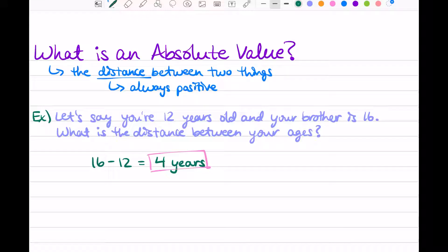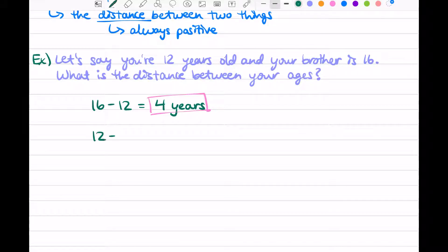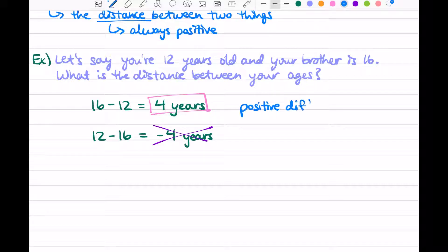However, the order matters here. We did 16 minus 12. What if we took 12 minus 16? Then we get negative four. And that doesn't really make sense, does it? Negative four years? Years is a measurement, so it must be positive. You could say you're four years younger, but you can't say negative four years. So that is not what we want. And since you can subtract numbers in two different ways, we call this the positive difference and the negative difference.